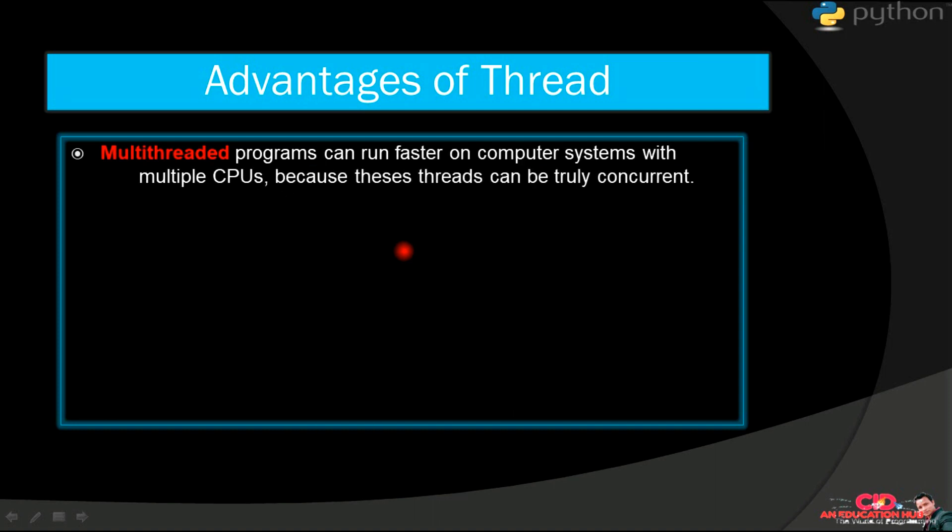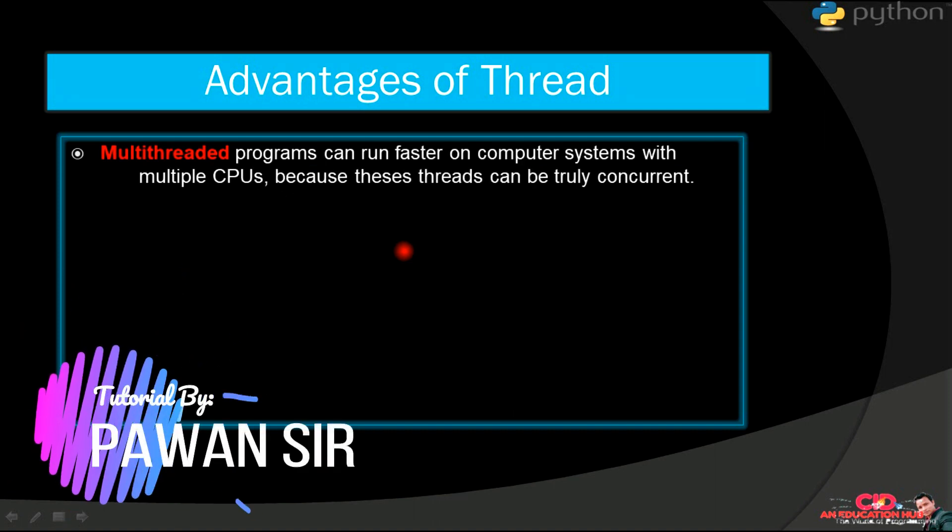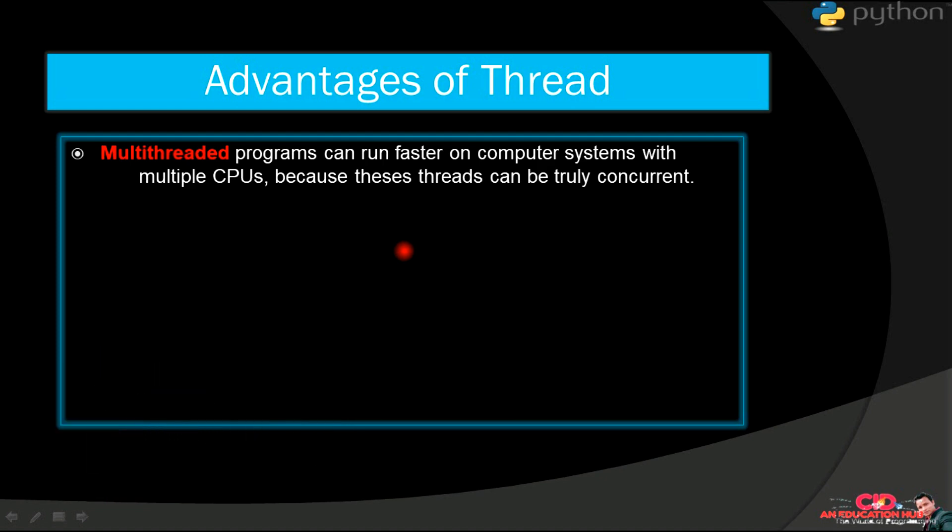Now let us understand what are the advantages of thread. Multithreaded programs can run faster because all the threads are being run at same time. This will save our time in executing the whole program.